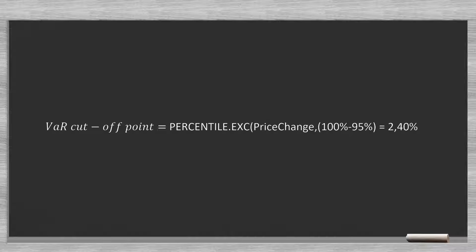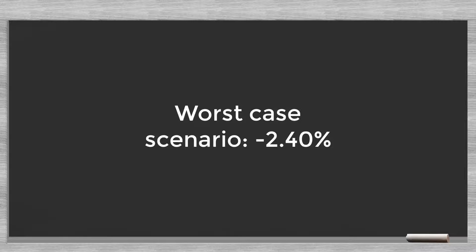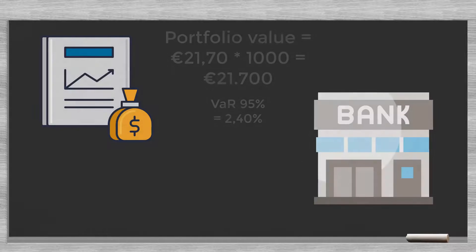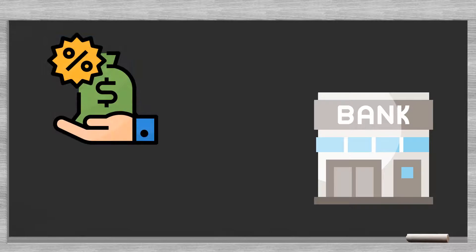Don't get confused — both the percentiles and the price changes are given in percentages. This is the worst-case scenario defined with 95% certainty: the price drop is minus 2.40%. This means we can lose 2.40% of our €21,700 KVW portfolio, which equals an amount of €520.17. The bank needs to answer whether its buffers are adequate to absorb a loss of €520.17. If so, the bank is fine; if not, it needs to sell part of its portfolio.